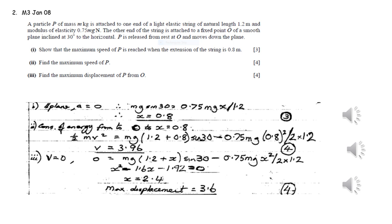In part two, we are applying conservation of mechanical energy, comparing the initial position to when the string has an extension of 0.8 metres — where the object is at its maximum speed. In both cases, we can work out the elastic potential energy, the gravitational potential energy, and the kinetic energy for the object.